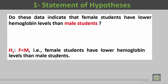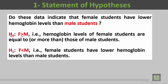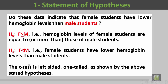That's to say, female students have lower hemoglobin level than the male students. Having written the alternate hypothesis, we can easily write the null hypothesis. The null hypothesis is that females will have more hemoglobin levels than males or equal to them — that's to say, hemoglobin levels of female students are equal to or more than those of male students. Now we have finished the first step, which is the statement of the hypothesis.